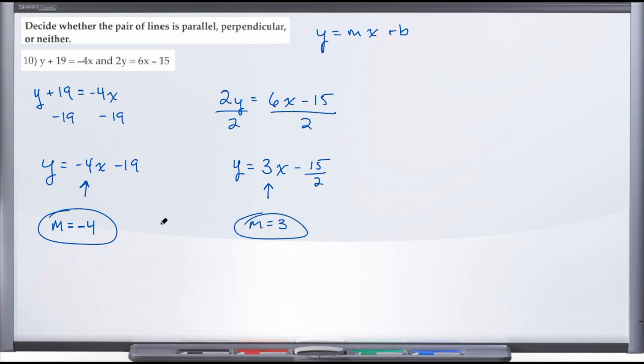And if we compare these two slopes, we have a negative 4 and a positive 3. So they are opposite with respect to the sign. One is positive, one is negative, but they're not reciprocals of each other. And so since they don't meet the opposite reciprocal criteria, these lines are not perpendicular.